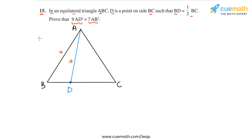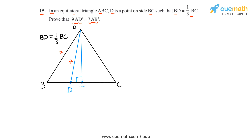We are given that BD is one-third of BC. We will apply the Pythagorean theorem to solve this problem, and to apply it we need right-angled triangles in the figure. So from vertex A we are going to drop a perpendicular onto BC. Let's call the foot of the perpendicular point E, so AE is perpendicular to BC. In an equilateral triangle, the altitude from a vertex bisects the opposite side, which means BE will be half of BC — E is the midpoint of BC.